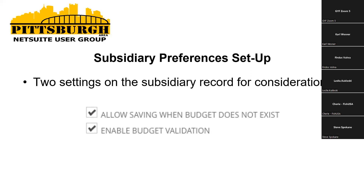There are two settings you would need to enable. The first is really optional and is better defined on the budget control template. Do you want to allow transactions to be saved when a budget does not exist? I would encourage you to enable this and then deal with that setting on the budget control template. If not, that could cause a lot of user pain every time they go to create a new PO and they're not able to save it. Those are discussions that would have to happen internally with your finance department. And then, of course, enable the budget validation for the subsidiary you're interested in.